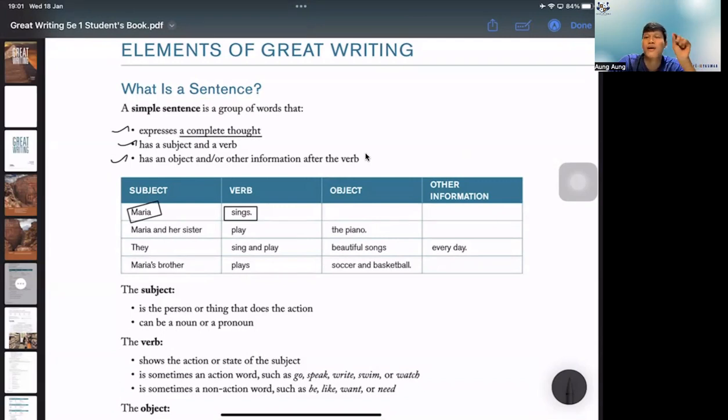For example, 'Maria seems happy' - this is a complete sentence with a subject and verb. But 'I am' alone doesn't make sense. It makes sense when you complete it, but without context, it needs more information.